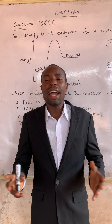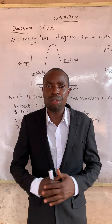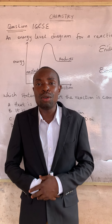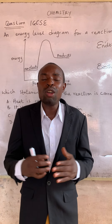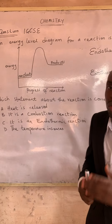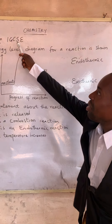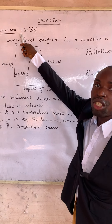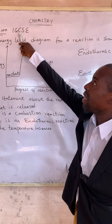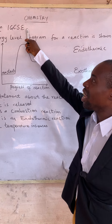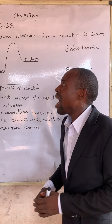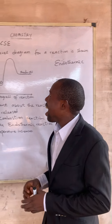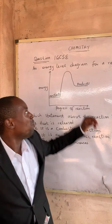Hello everyone, my name is Andran Aline, the Bazooka Prophet, and today in this particular exciting video we will be solving questions straight away from IGCSE, which means International General Certificate of Secondary Education. This question is in chemistry, and the question is about an energy level diagram for a reaction.